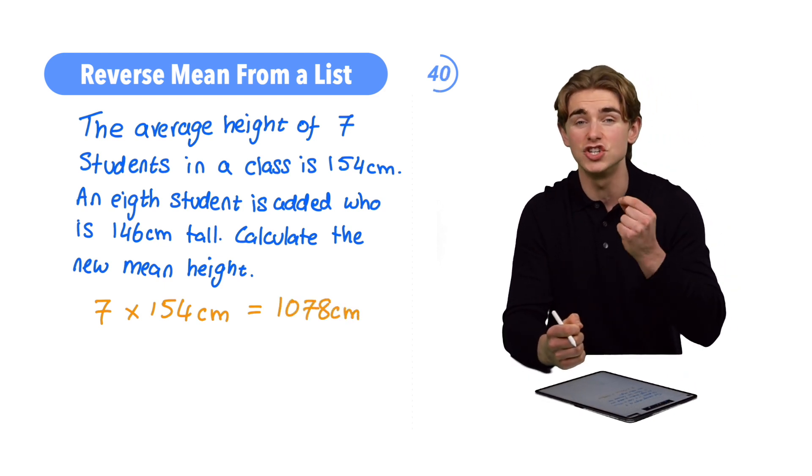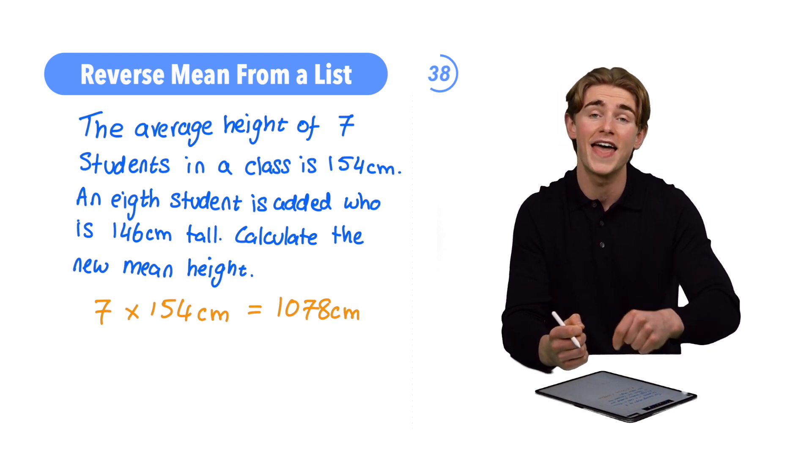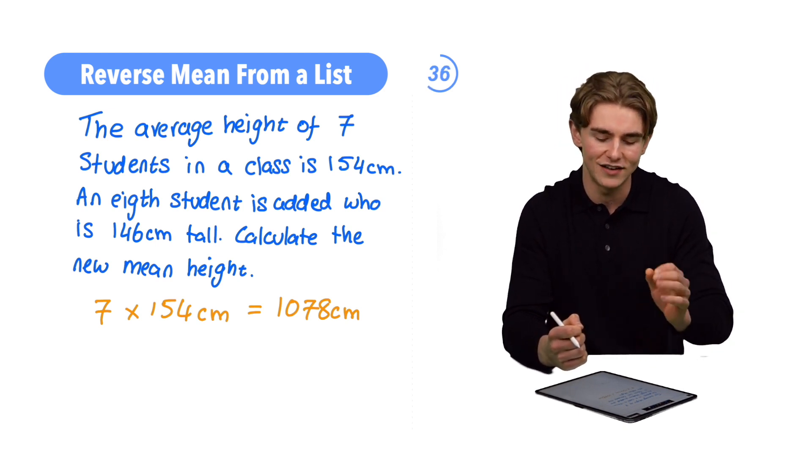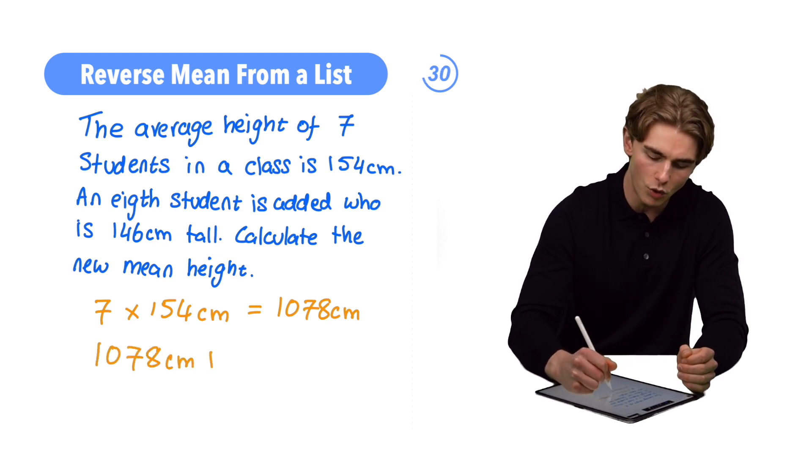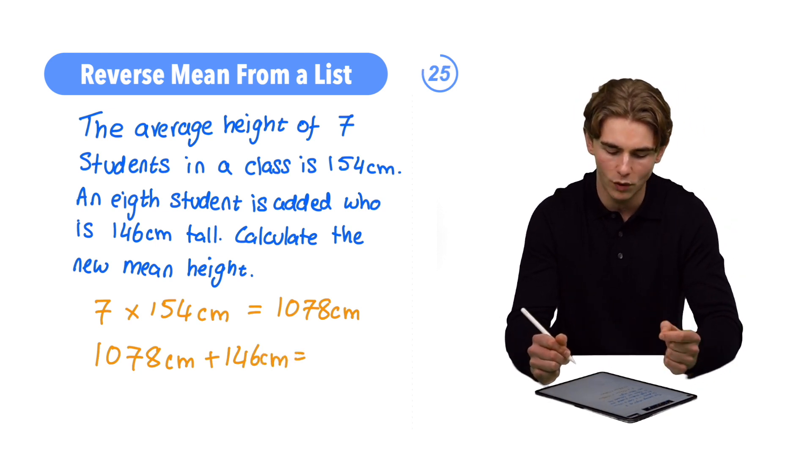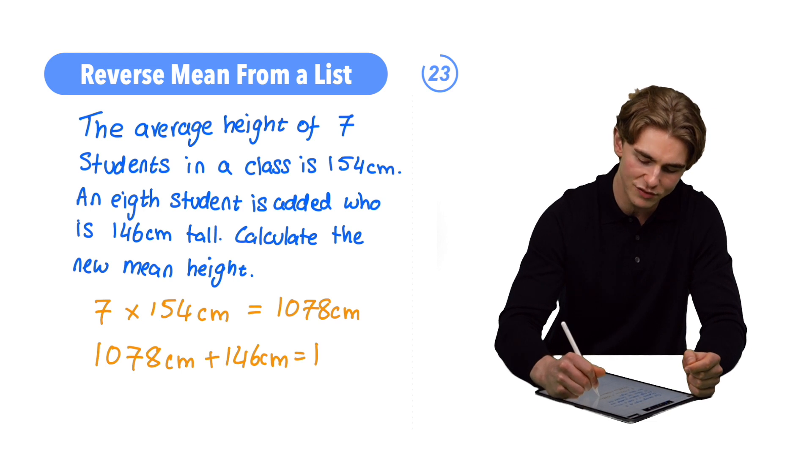Now, what are we going to do? We need to find the new total height and then divide that by the new number of people, which is eight. So, finding the new total height, we're going to do our 1078 centimeters plus our 146 centimeters, which was the height of that eighth student. 1078 plus 146, that is going to be 1224 centimeters.